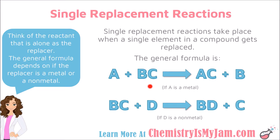Remember that we always write positive elements first. So A is trying to replace B — the positive metal is trying to replace the positive portion of the compound. In this case, you can see that A has replaced B. Now A is part of a compound with C, and B is left over by itself.